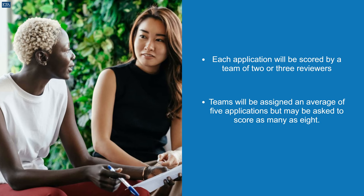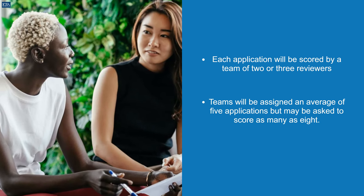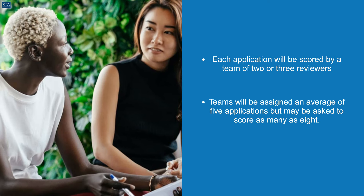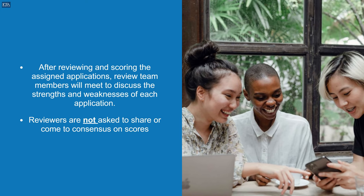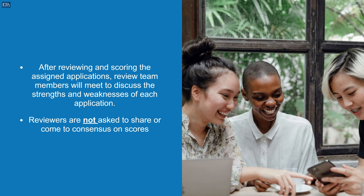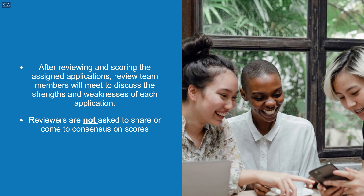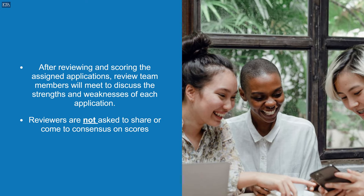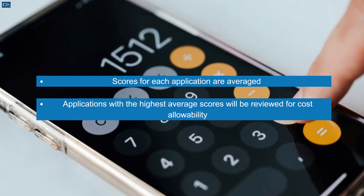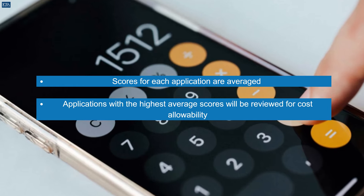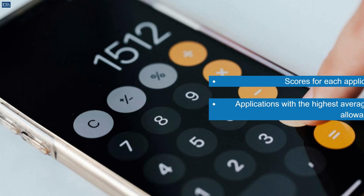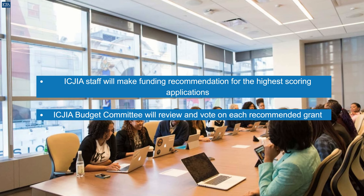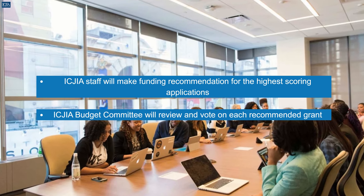Each application will be scored by a team of two or three reviewers. Teams will be assigned an average of five applications but may be asked to score as many as eight. After reviewing and scoring the assigned applications, review team members will meet to discuss the strengths and weaknesses of each application. Reviewers are not asked to share or come to consensus on scores. Scores for each application are averaged, and applications with the highest average scores will be reviewed for cost allowability. ICJIA staff will make funding recommendations for the highest scoring applications, and the ICJIA budget committee will review and vote on each recommended grant.